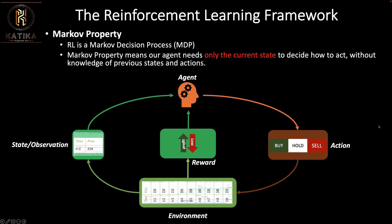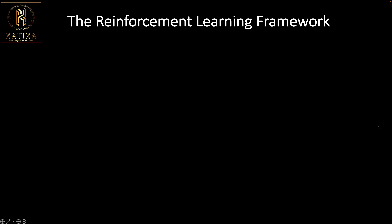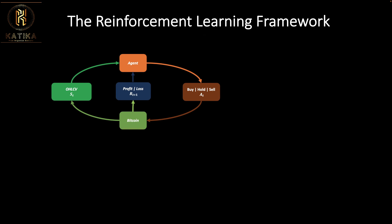Moving further, reinforcement learning is a sequential decision-making process. Let's look at what the reinforcement learning loop sequence looks like. We make a decision every time we get an observation, we make a decision, we get a reward, and we go to the next observation — that's the sequential loop of reinforcement learning.